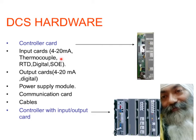Input cards can be directly interfaced with sensors like thermocouples or RTDs. Similarly, we have output cards which can be digital or analog, giving 4 to 20 milliampere. Along with that, any hardware includes a power supply module, a communication card for modules to communicate amongst themselves, and the required cables. All these control cards fit into racks — this is how DCS looks in general.